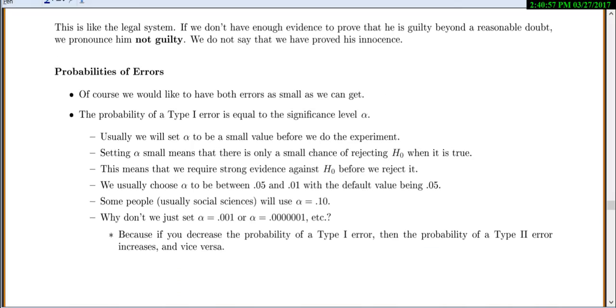Let's talk about the probability of our errors. Of course, we want to have the probability of both errors as small as we can get. The probability of a type 1 error is equal to your significance level alpha. Usually, we'll set alpha to be a small value before we do our experiment. Setting alpha small means there's only a small chance of rejecting the null when it's true, so we require strong evidence against the null before we reject it.